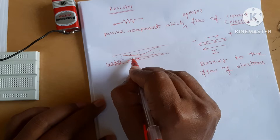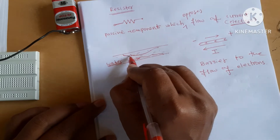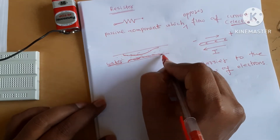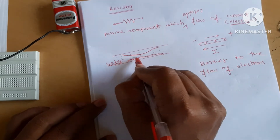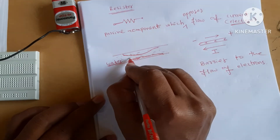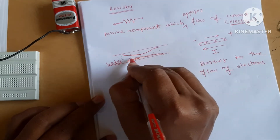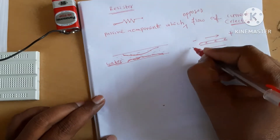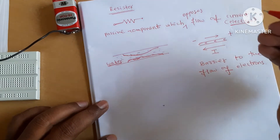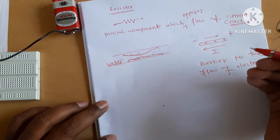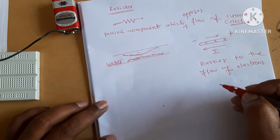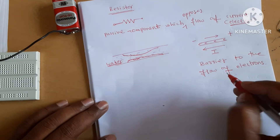The surface area of a pipe becomes less at a narrowing, so there is resistance to the flow of water. Similarly, when a resistor is placed in a circuit, the flow of electrons decreases and current decreases. That is the resistor.